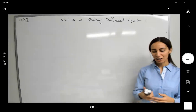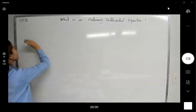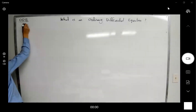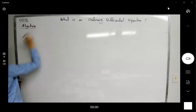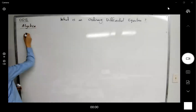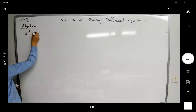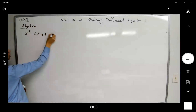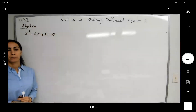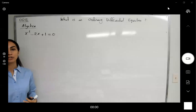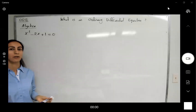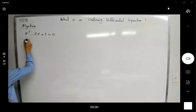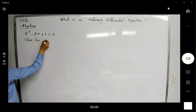In algebra, we learn about equations. Suppose you have an equation like x squared minus 2x plus 1 equal to 0. You have some expressions on the left and a constant on the right, and your goal was to solve this equation — solve for x.